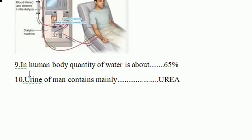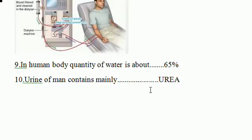The ninth question: in the human body, the quantity of water is about 65%. The tenth question: urine of man contains mainly urea.